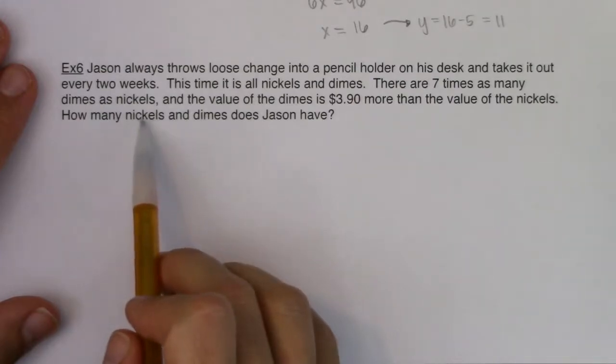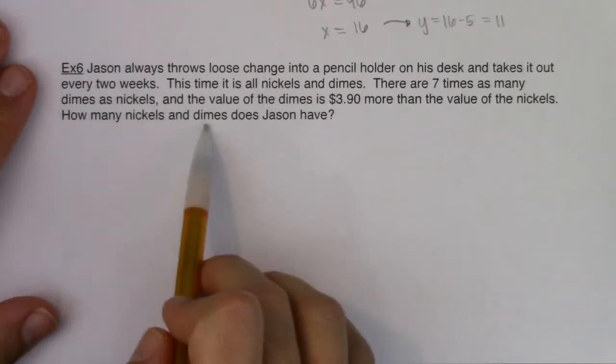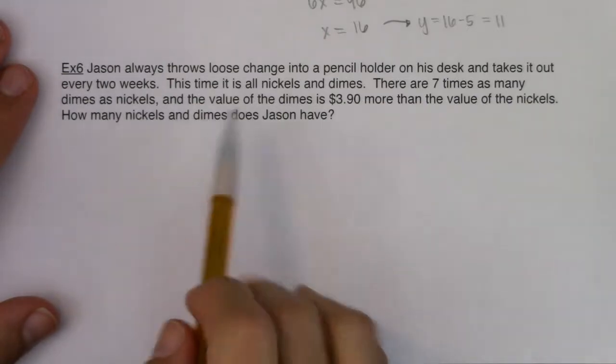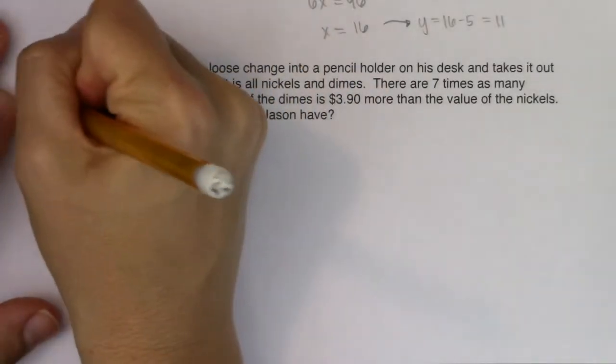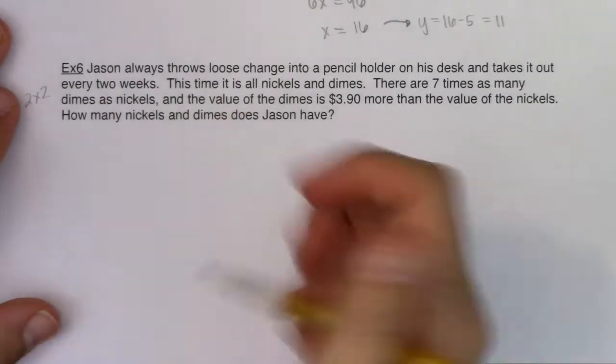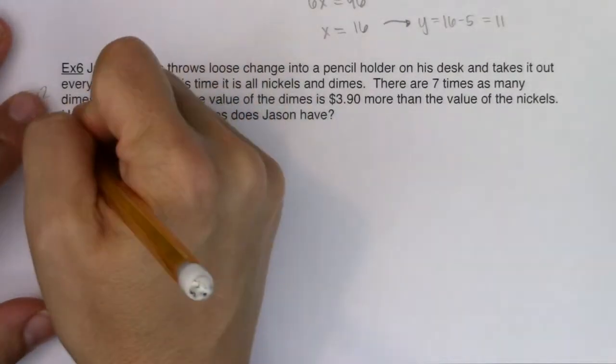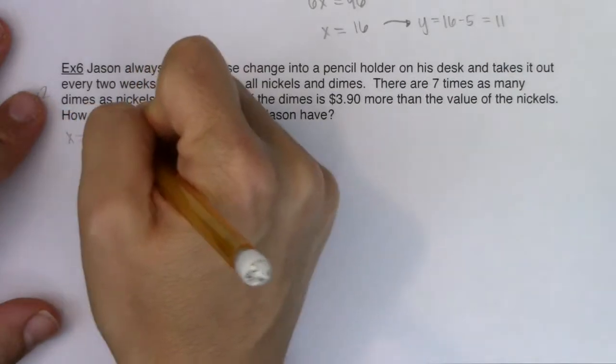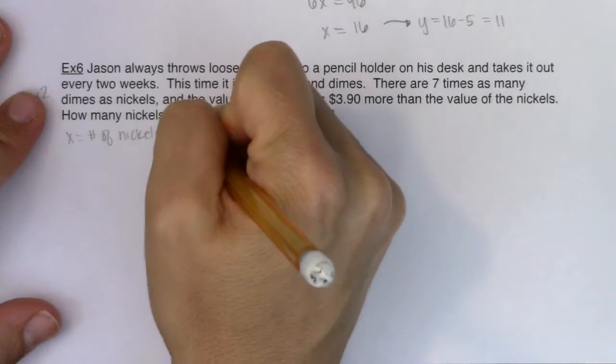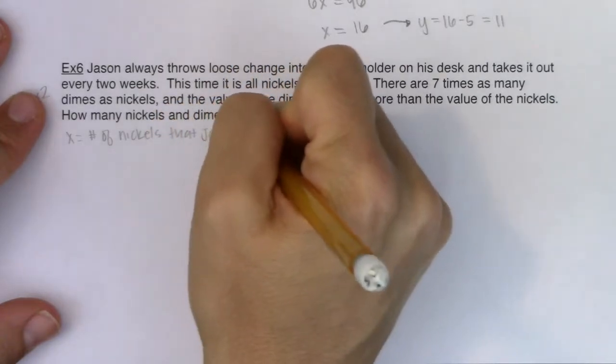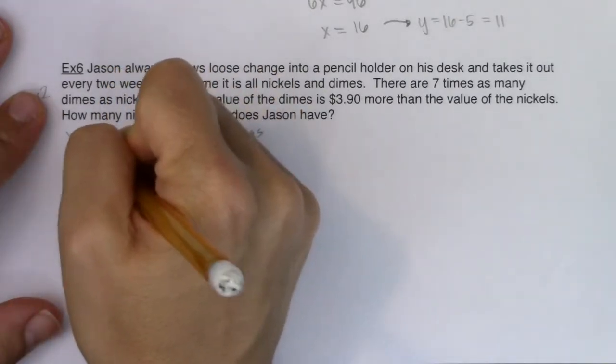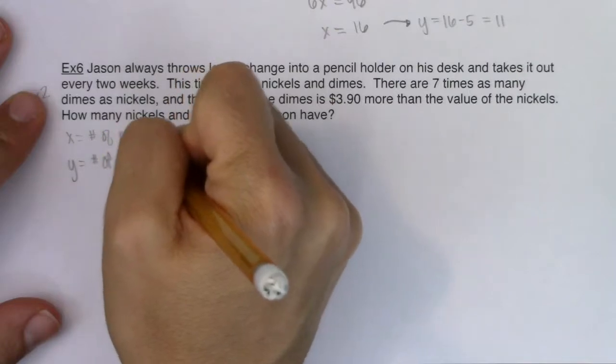Alright, so if I hear how many nickels and dimes does Jason have, I hear two variables. I need to find out the number of nickels that Jason has and the number of dimes that Jason has. With two variables, I know I'm going to be running a two by two, which means once I pick my x and y, I better find two equations to match them. So I'm going to let x equal the number of nickels that Jason has, and I'll let y equal the number of dimes that Jason has.